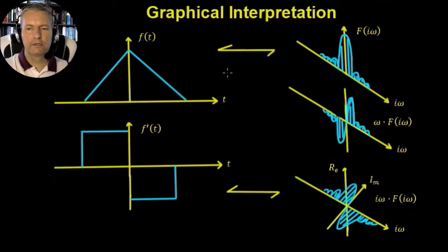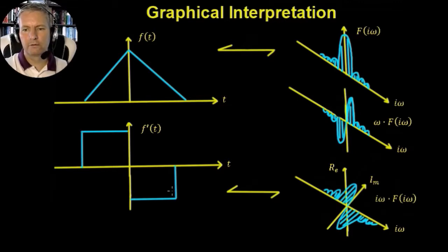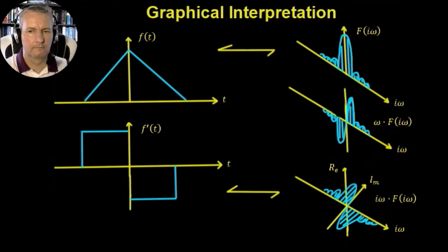Here's a graphical interpretation. Let's imagine we have a small triangular function. When we find the Fourier transform of that triangular function, we get a raised sinc function, which is entirely above the positive axis. Now whenever we differentiate this triangular function, we get a square pulse. The rate of change is a constant positive value on one side and a constant negative value on the other. So when we differentiate a function in the time domain, it's equivalent to multiplying f(iω) by iω in the frequency domain.